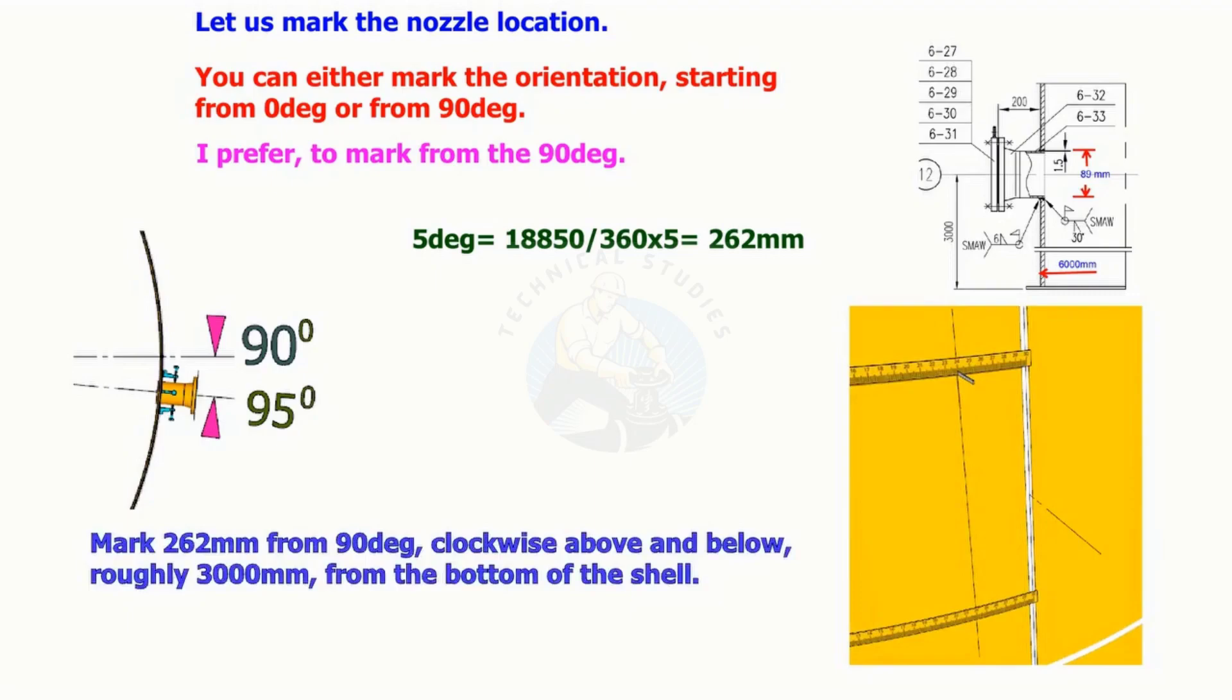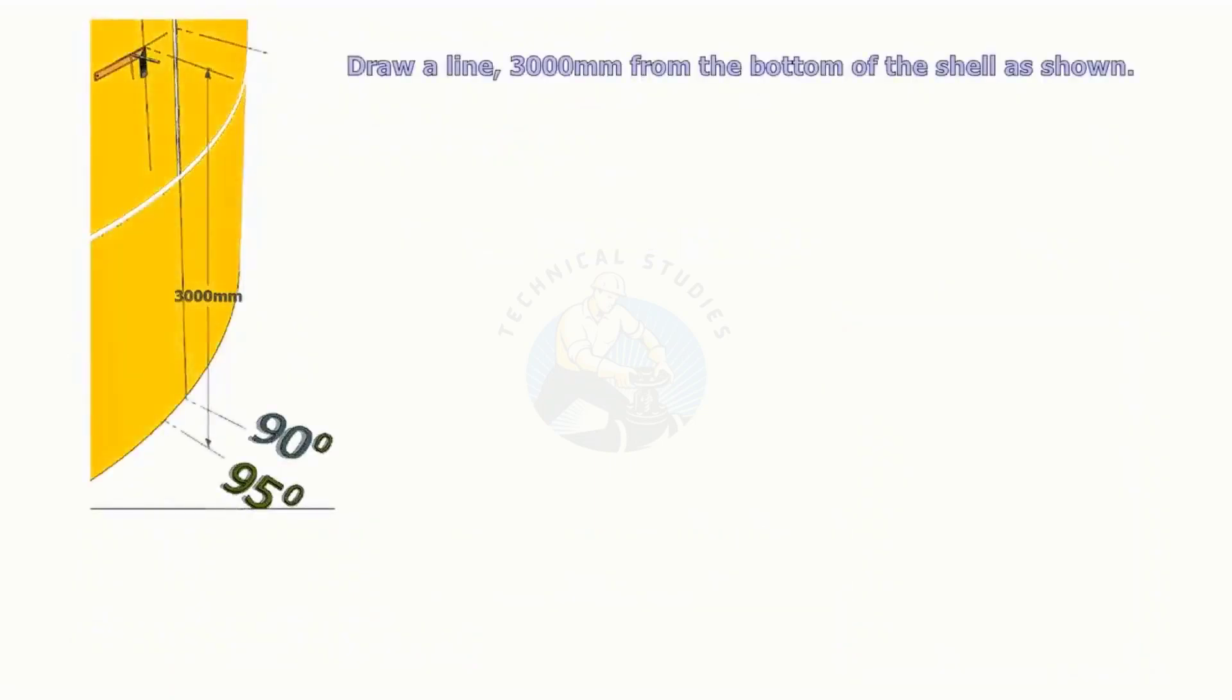Mark 262 millimeters from 90 degrees clockwise, above and below, roughly 3000 millimeters from the bottom of the shell. Draw a vertical line on these marks. Draw a vertical line 3000 millimeters from the bottom of the shell, as shown.